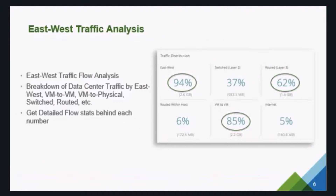The east-west traffic analysis shows that most customers see greater than 80% of traffic remaining within the data center. This example of 94% is not uncommon, and this is where we're seeing a lot of data breaches. Customers are protecting security at the network perimeter; however, once the perimeter is breached, lateral movement — east-west traffic — becomes very easy without micro-segmentation. Providing this metric motivates and encourages customers to secure their east-west traffic and secure the network from within.